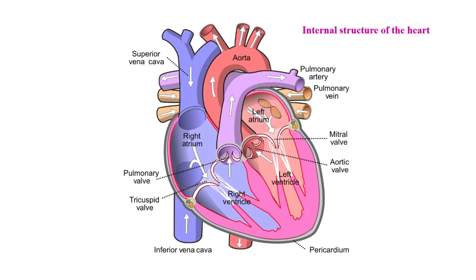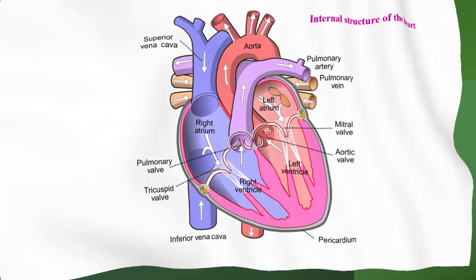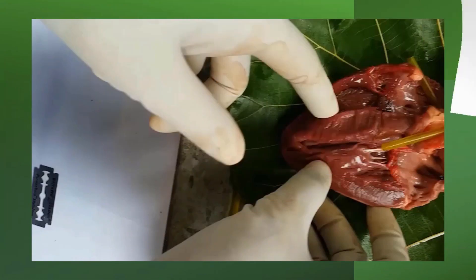This is the septum that divides the two ventricles. Here is the septum that divides the auricles from the ventricles. And here is another septum that divides the two auricles. Let us now observe these parts in the mammalian heart.